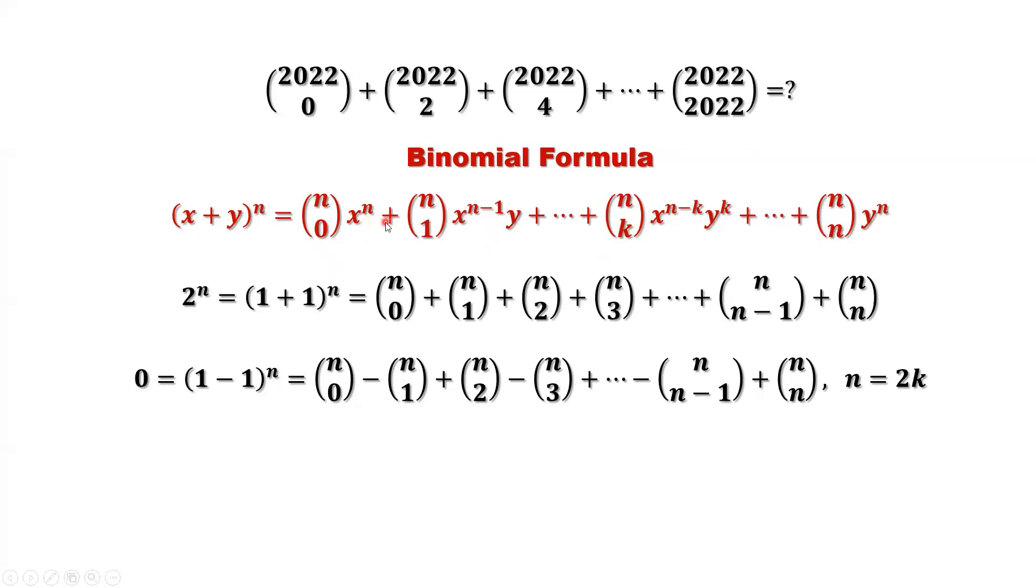x, y terms only take one or negative one, alternating. The first one is positive, the second one is negative. Here we are assuming the power n is an even number, so the last term is positive.